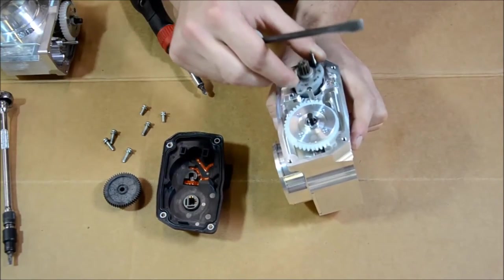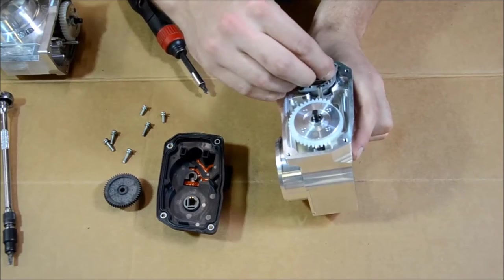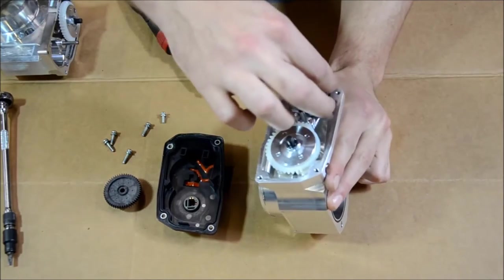Install the electric motor into the Boomba Racing throttle body, making sure to use the same orientation in which it came out. Secure with the two screws.